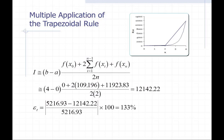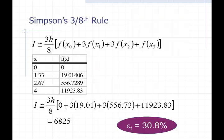Now let's take a look at Simpson's three-eighths rule. Here I show the formula itself. These are the values I get when taking the step size H equal to (b minus a) over N, where N in this case is 3 — giving steps of 1.333, 2, and 4. I show the y values and plug them in to get an estimate of 6,825, so I've reduced my error down to 30.8%.